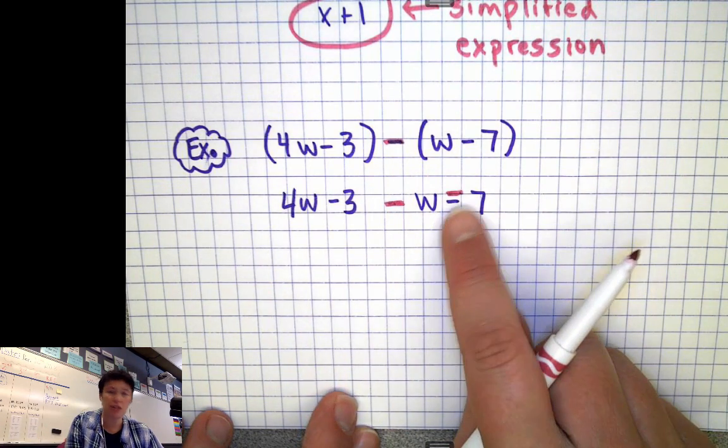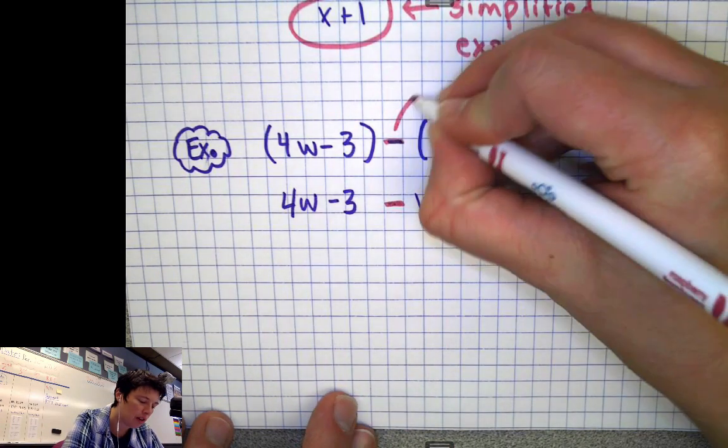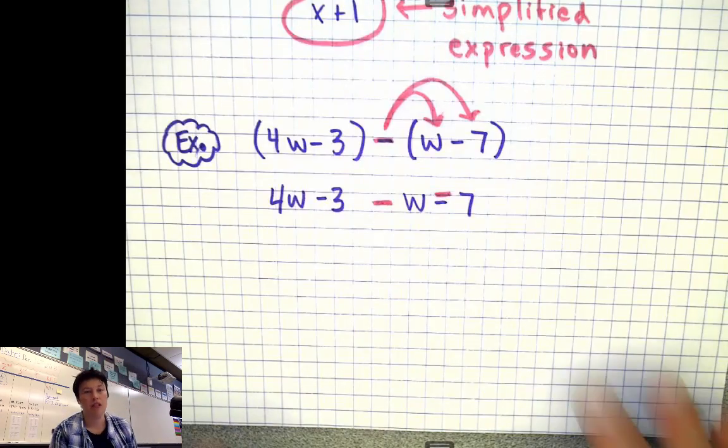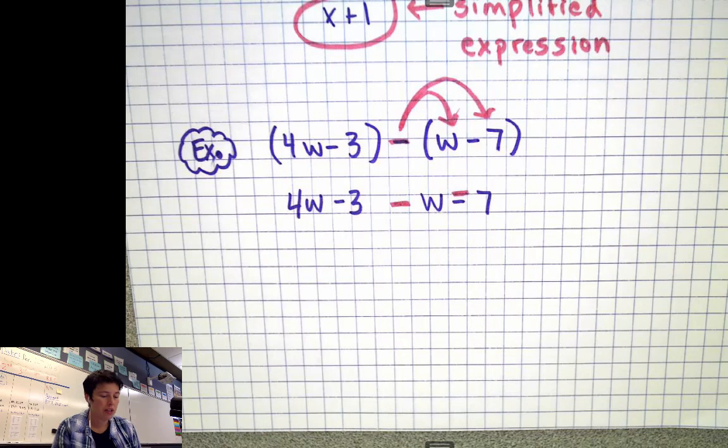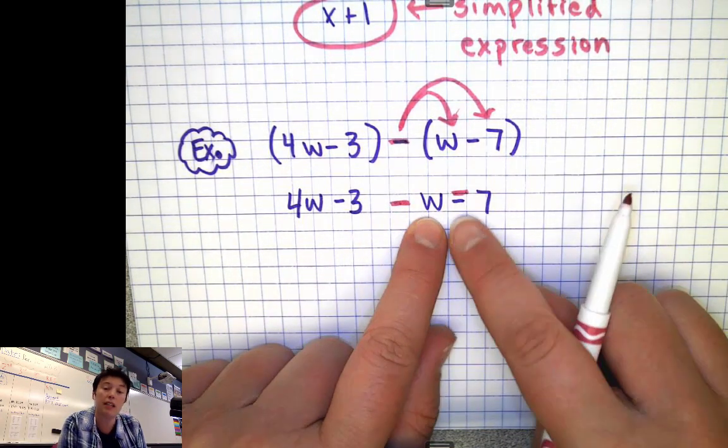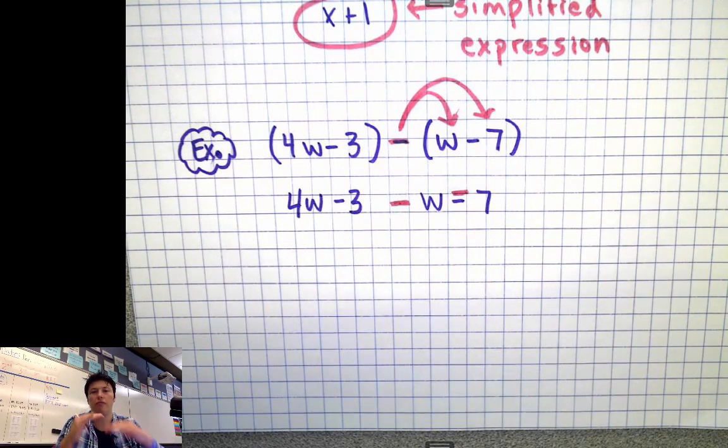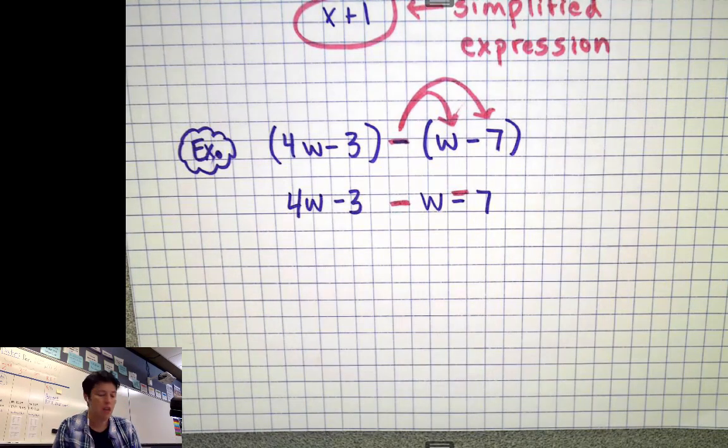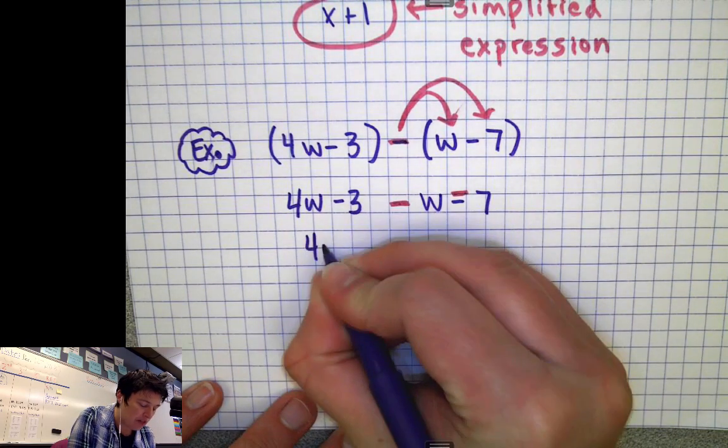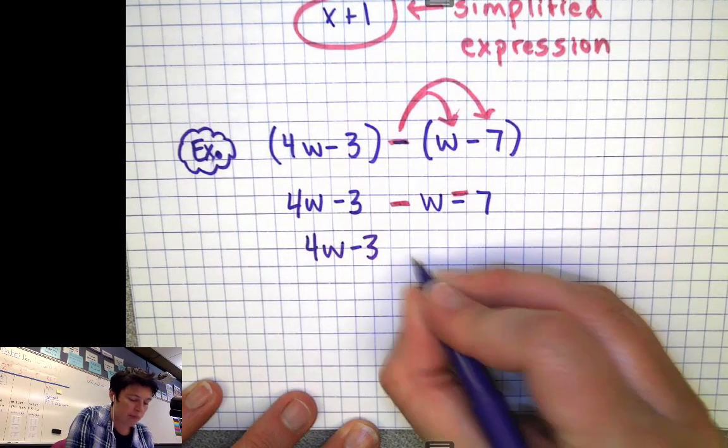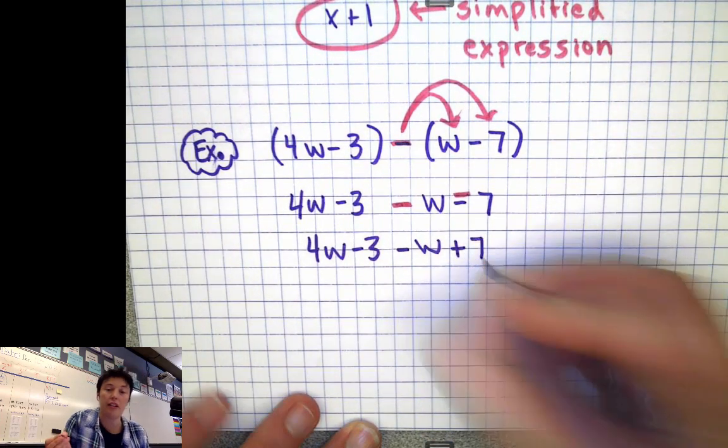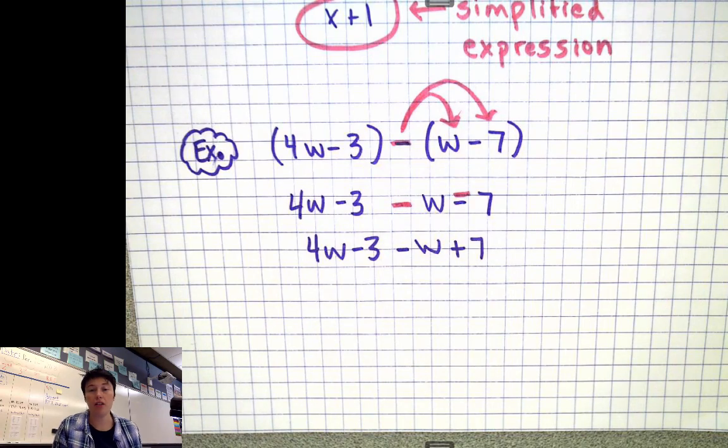I end up with two subtraction signs. And a lot of people do this, they'll draw arrows. We call that distributing the subtraction sign. We want to subtract both of these items, we're going to take away the w, and we're going to take away the minus 7. Well, what does take away a negative turn into? Two negatives make a positive. So when I rewrite this, I have 4w minus 3. Now I have minus w, and minus minus turns into a plus 7. And now I can rearrange and combine my like terms, but I had to be really careful about this.